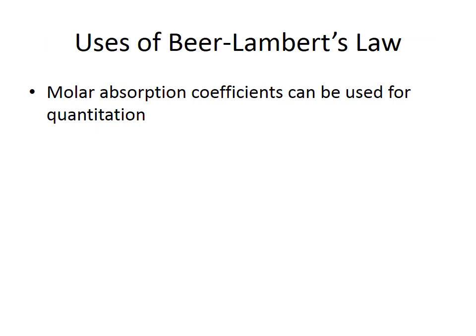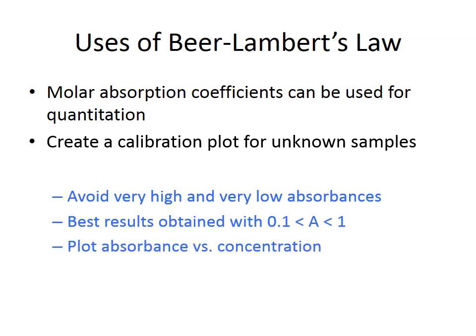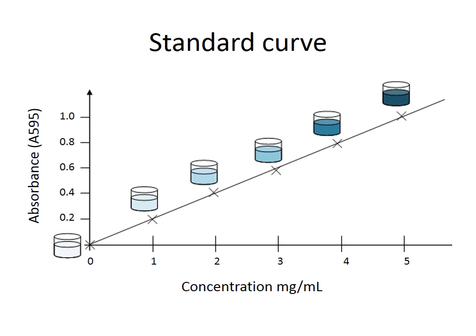Beer-Lambert's Law and the molar absorption coefficient can be used for quantitation. They can be used to create a calibration plot for unknown samples by plotting a standard curve of known standards and then using that to calculate the concentration of an unknown sample. There are a few guidelines to follow when creating a standard curve: firstly, avoid very high and very low absorbances. The best results are obtained where the absorbance is between 0.1 and 1 arbitrary unit.